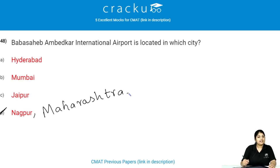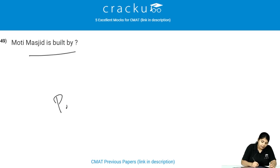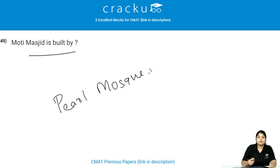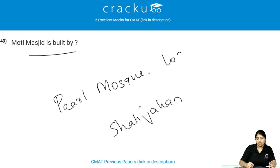Moti Masjid was built by whom? Moti Masjid is also known as the Pearl Mosque. It was built by Shah Jahan and is located in Agra.